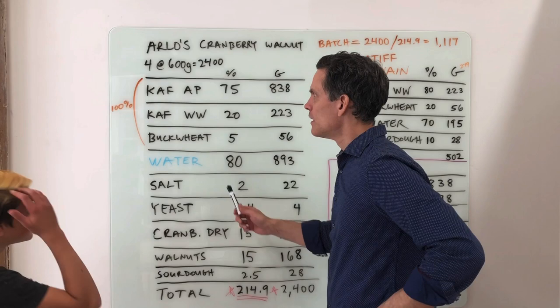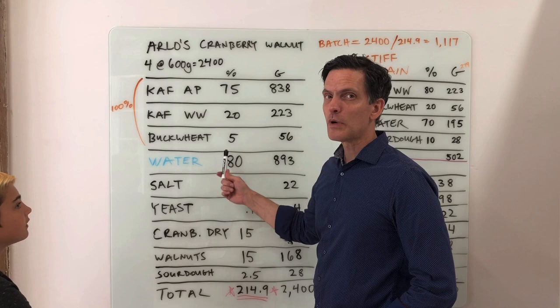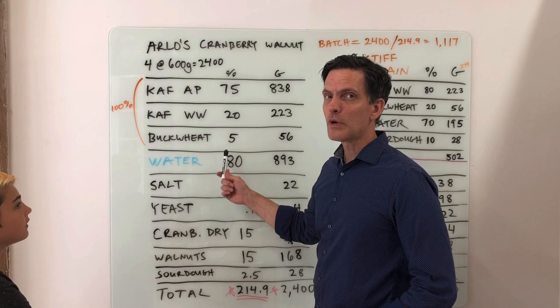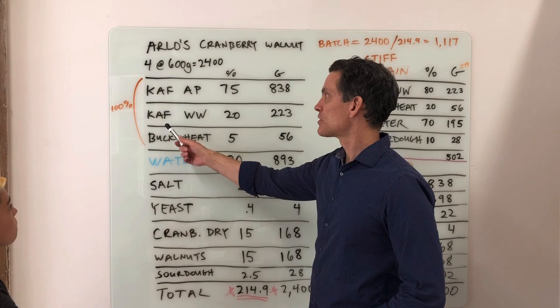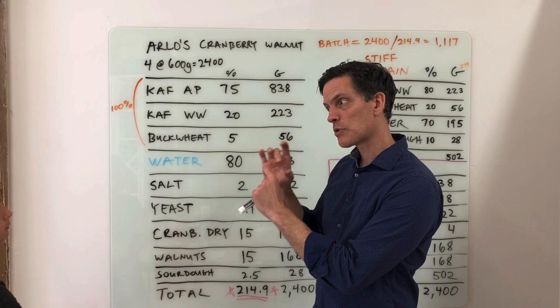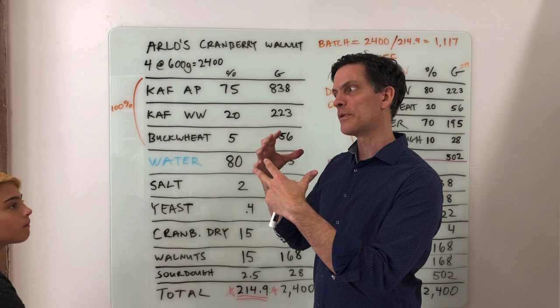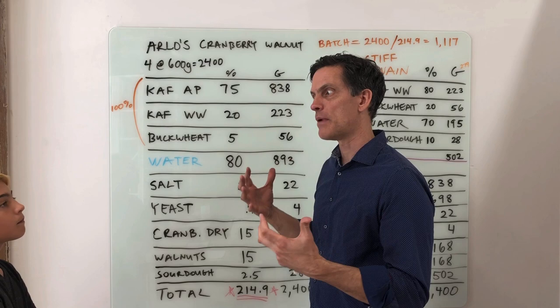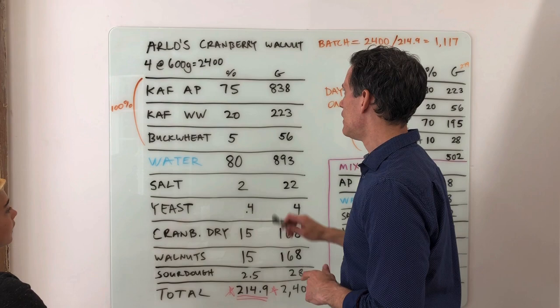Arlo wanted some whole wheat and buckwheat. I put just a little bit of buckwheat — a little goes a long way — and then 20% whole wheat, so we'll have about 25% total whole grain and 75% white. If we went up to 50% whole grain and 50% white, we'd have a tighter structure. The white flour will enable a little more open structure and a lighter eating experience.